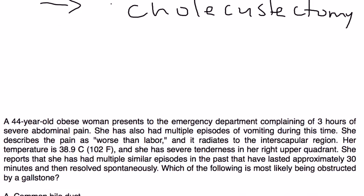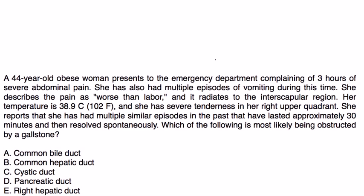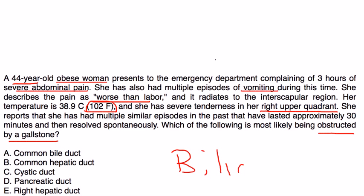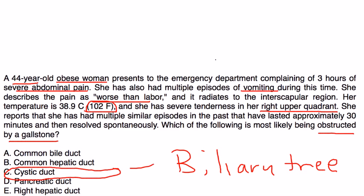Clinical vignette: A 44-year-old obese woman presents to the ED with three hours of severe abdominal pain and multiple episodes of vomiting. The pain is worse than labor and radiates to the intrascapular region. Temperature is 102, with severe tenderness in the right upper quadrant. She has had similar episodes in the past lasting 30 minutes that resolved spontaneously. The question asks which duct is being obstructed by a gallstone — and as mentioned earlier, it is the cystic duct.